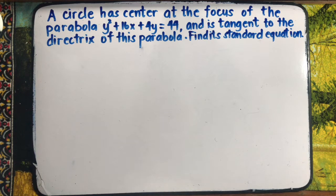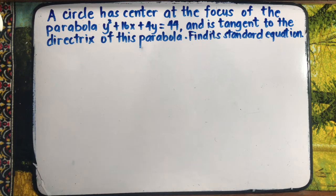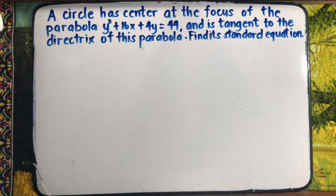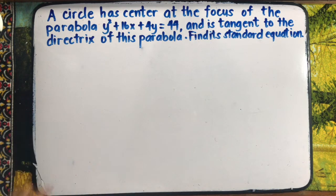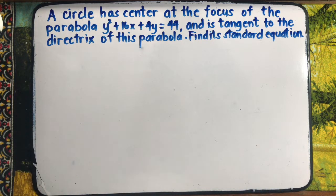A circle has its center at the focus of the parabola y² + 16x + 4y = 44, and it is tangent to the directrix of this parabola. We are asked to find its standard equation.